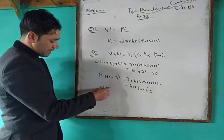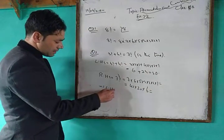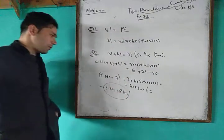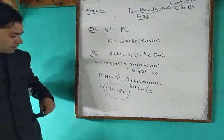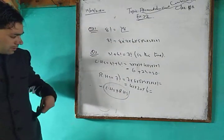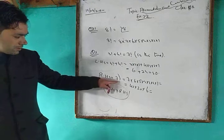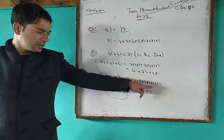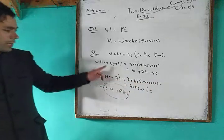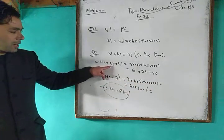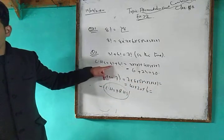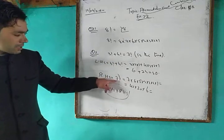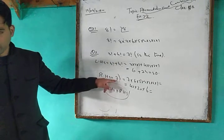Therefore LHS is not equal to RHS. The statement 3! + 4! = 7! is false. Note that the sum of two factorials is not equal to the factorial of their sum. So 3! + 4! does not equal 7!.